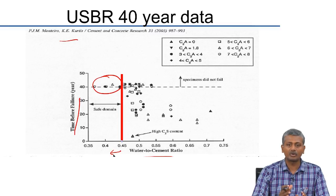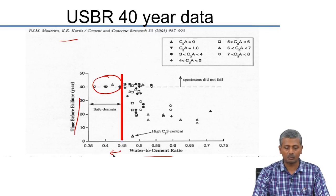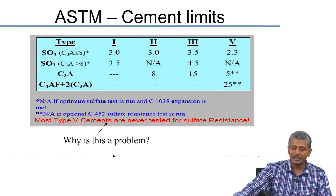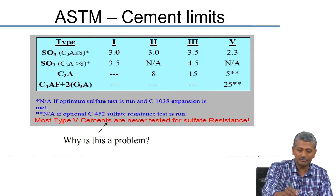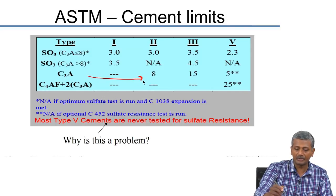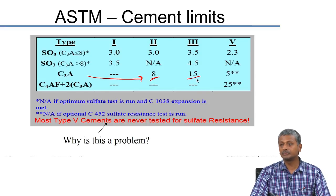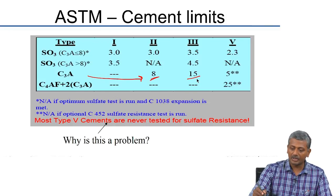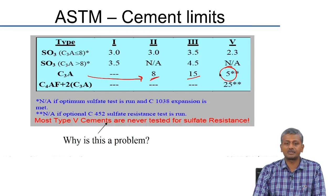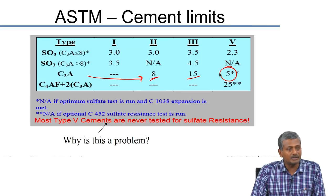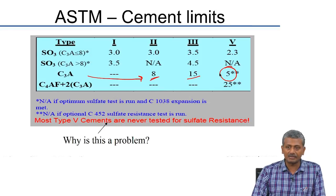All concretes that survived beyond 40 years had water-cement ratio less than 0.45. Most specifications limit the C3A content: Type 2 cements are moderate sulphate resistant with about 8% C3A; Type 3 generally has high C3A for rapid hardening; Type 5 sulphate resistant cement (per ASTM specifications) requires C3A content controlled to less than 5%.